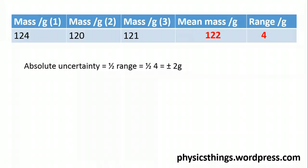How do I work this out as a percentage uncertainty, then? Well, I take my absolute uncertainty of 2, I divide it by my mean mass, my obtained result, of 122, and then I multiply that by 100 to give me a percentage uncertainty of 1.64%.